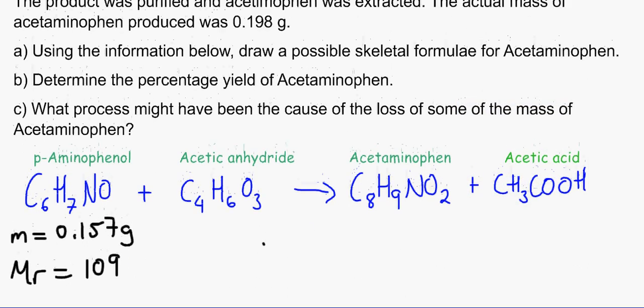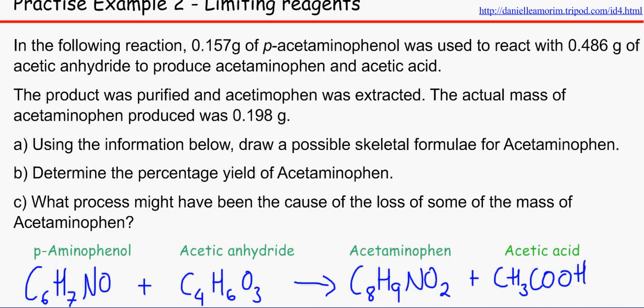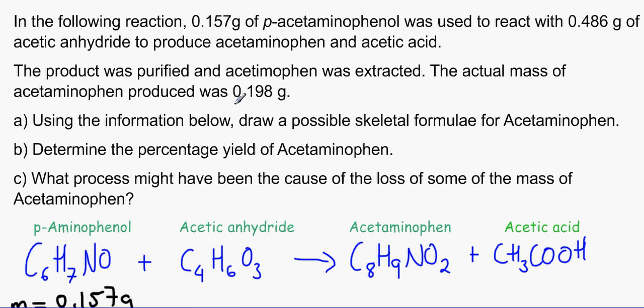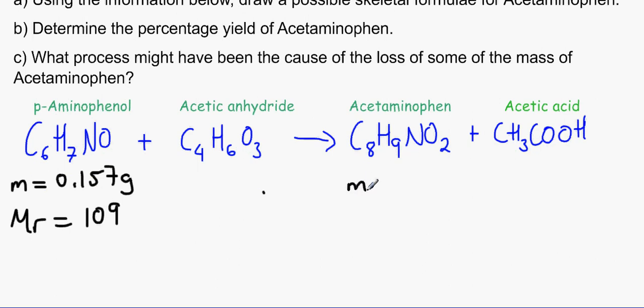We can find out the MR of this by doing 6 times 12, which is 72, plus 7, plus nitrogen is 14, plus oxygen which is 16, and that would make 109.